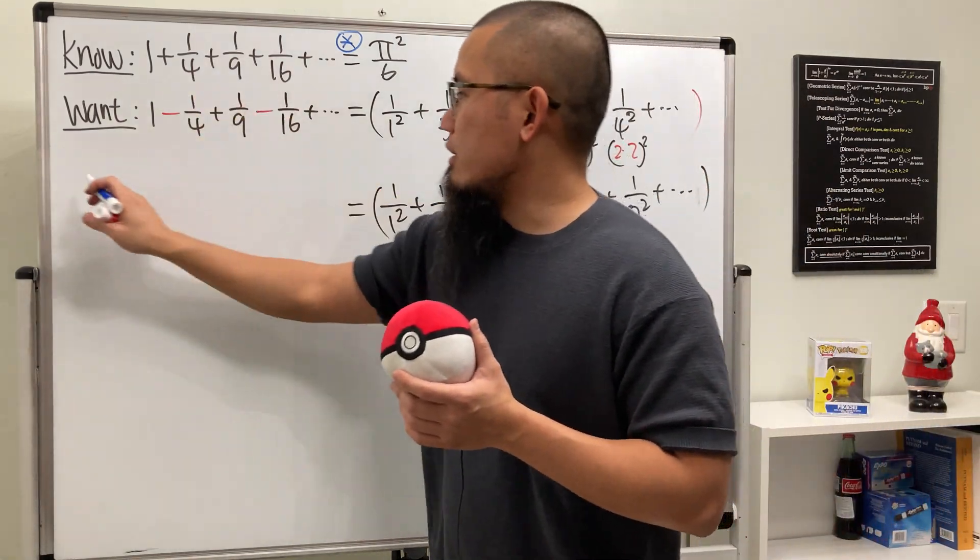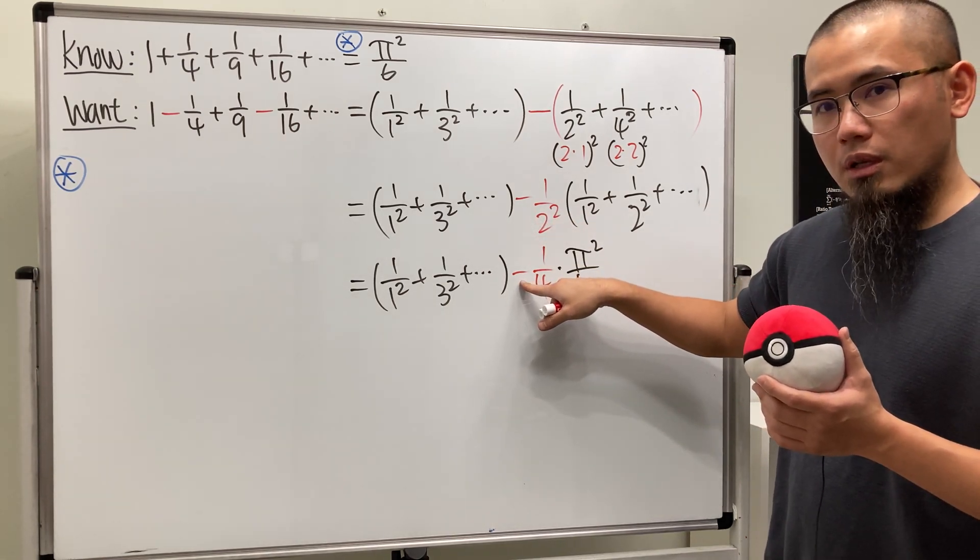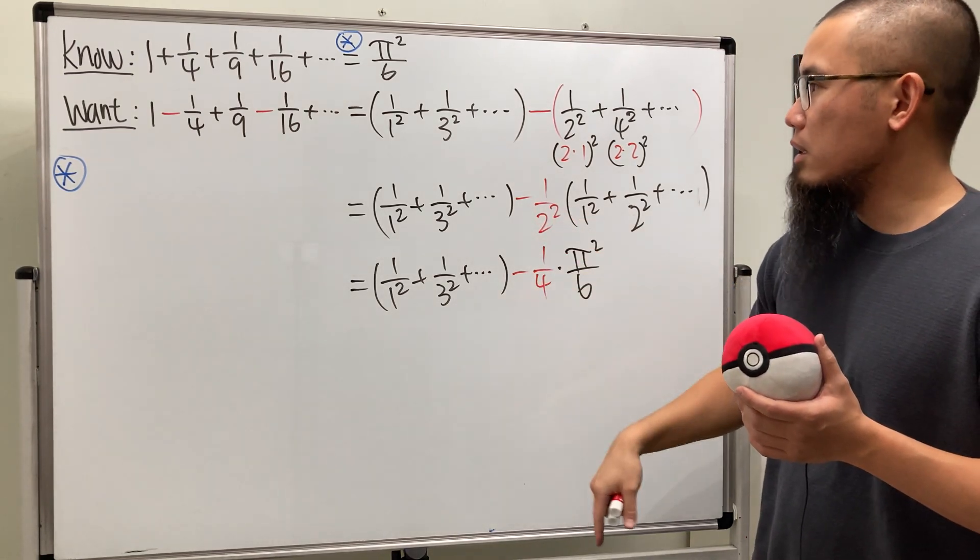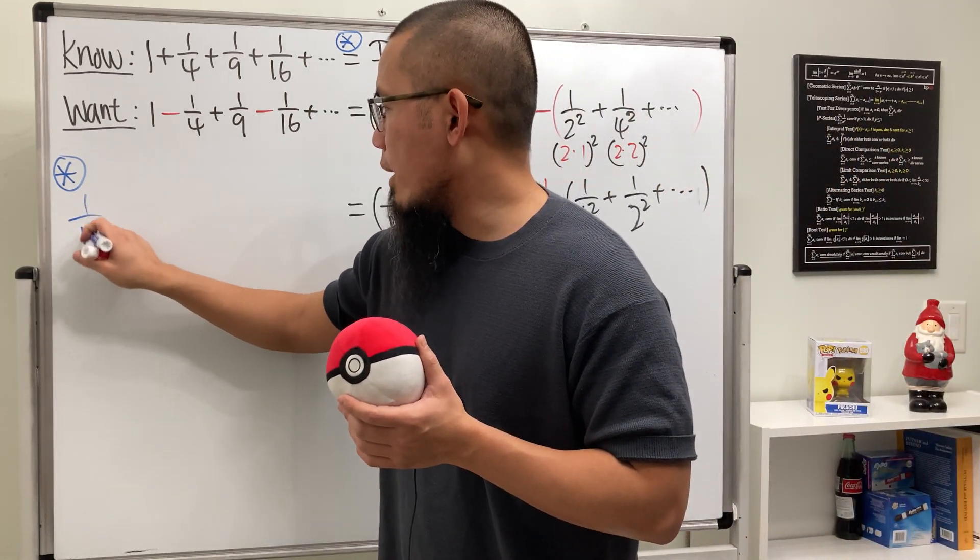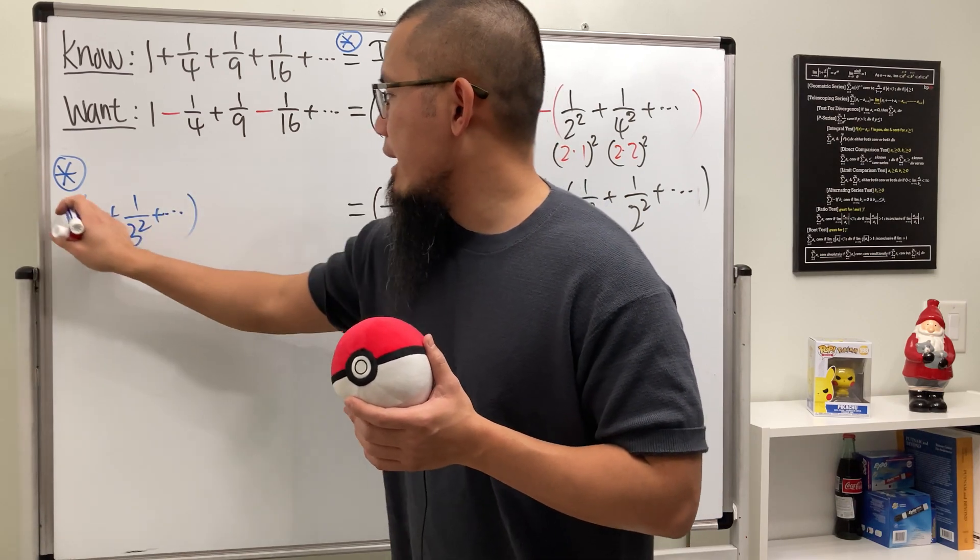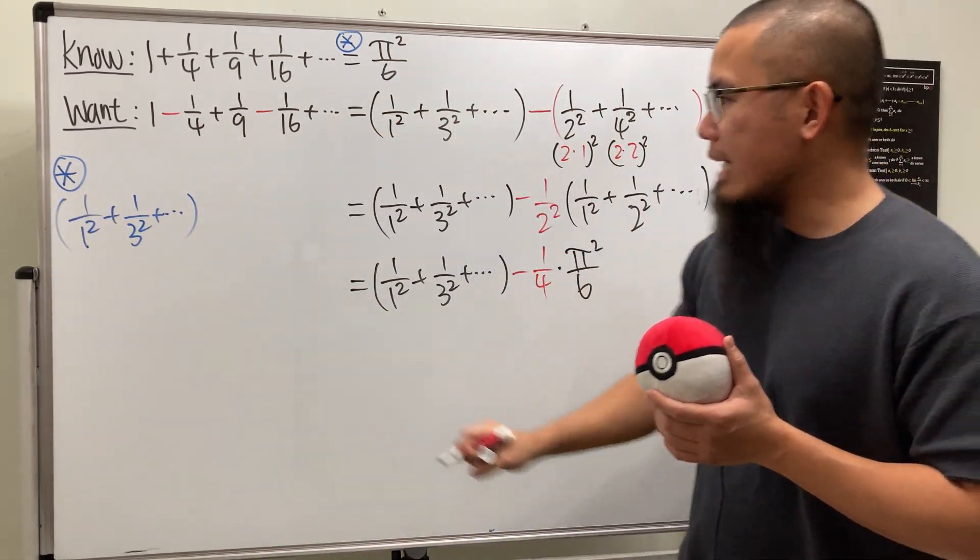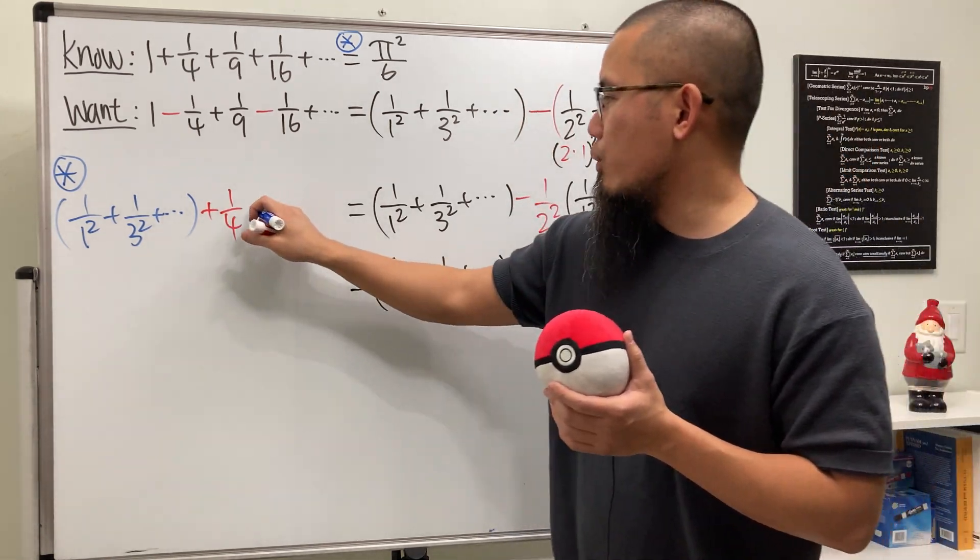We can factor it the same way, except for the minus, it's actually a plus. So by looking at that, we can just go ahead and get 1 over 1 squared plus 1 over 3 squared plus dot dot dot. And then we are going to add instead of subtract, and then we have the pi squared over 6.